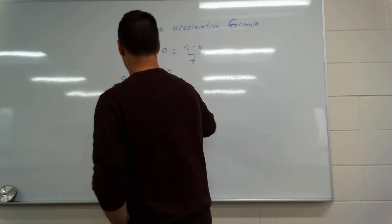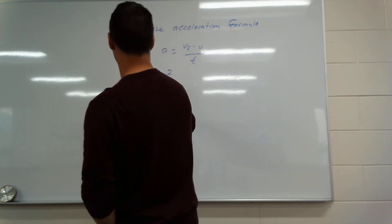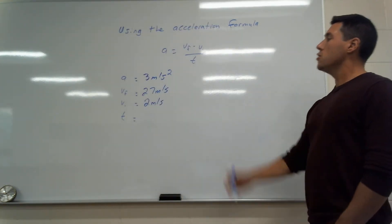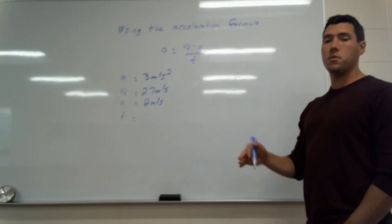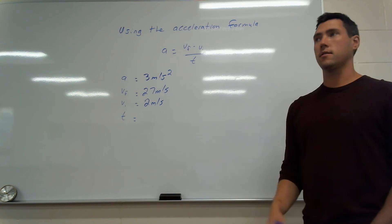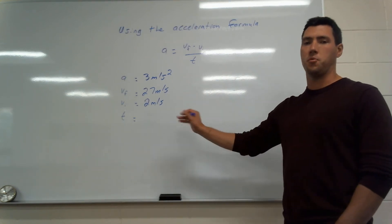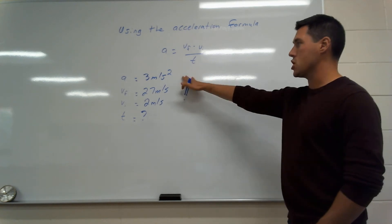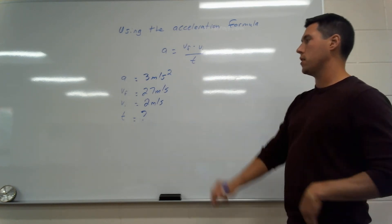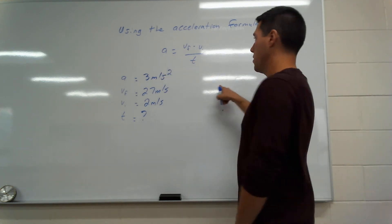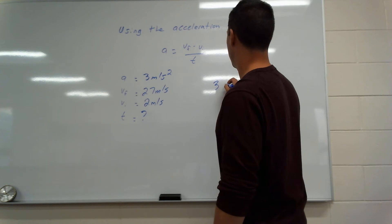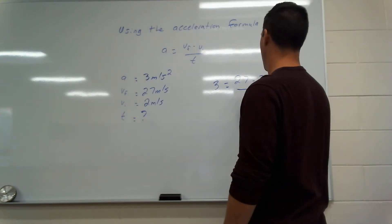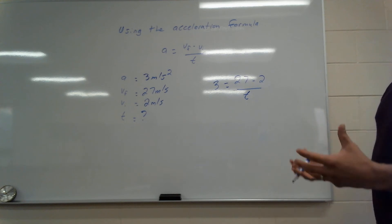The skier finishes at a speed of 27 meters per second at the bottom of the hill — that's close to 90 km/h, quite fast. We know acceleration, vi, and vf, so we can solve for time. Plugging in: 3 equals 27 minus 2, over t.